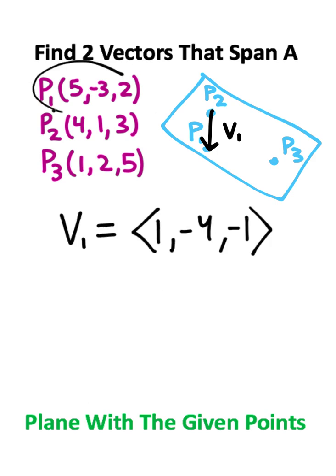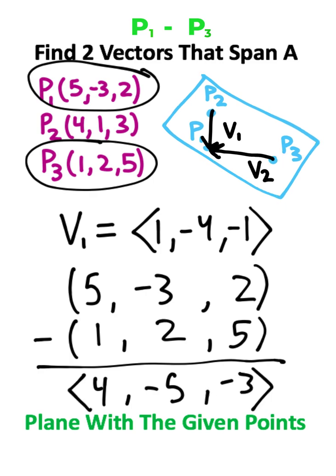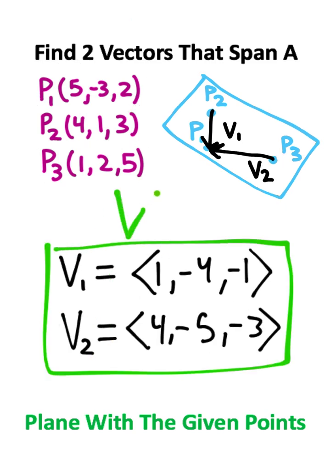Now that we've found one vector, I'm going to take point one and this time subtract off point three. Five minus one is four, negative three minus two is negative five, and two minus five is negative three. So we've created a second vector between points one and three. And notice how we found two vectors that span this plane.